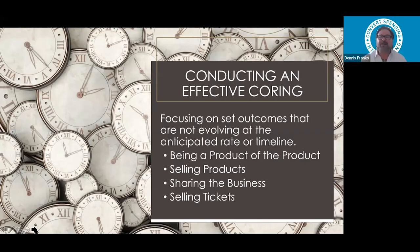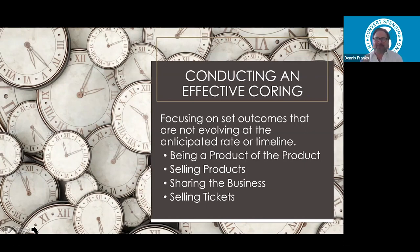As your organization grows, we're going to need corings to help teammates get past obstacles and become success stories. Focusing on set outcomes not evolving at an anticipated rate or timeline — quite frankly, I don't know if most unfranchise owners know how fast they should be building their business. We offer a two to three year plan. But in reality, the clock doesn't start from when you register — it starts when you begin implementing the basic five proven systems on a regular basis.